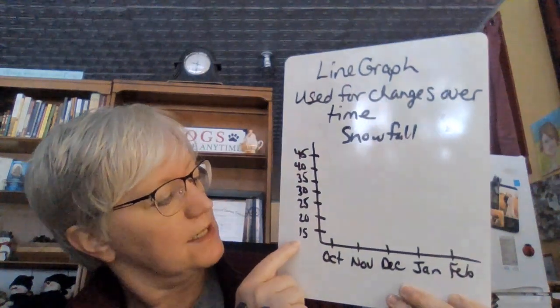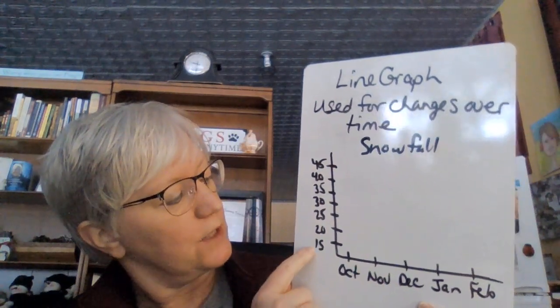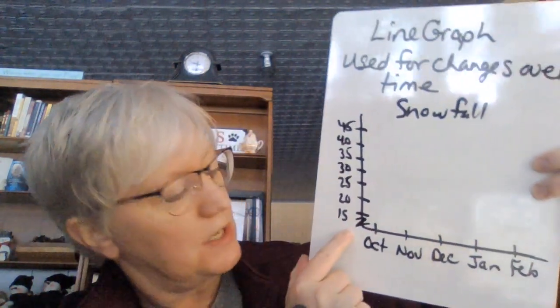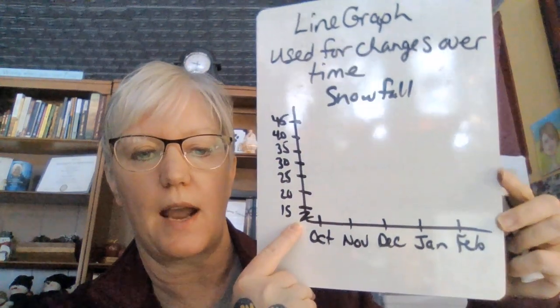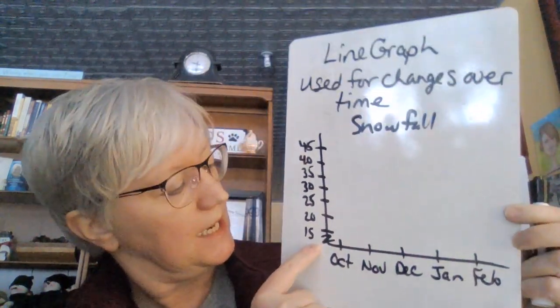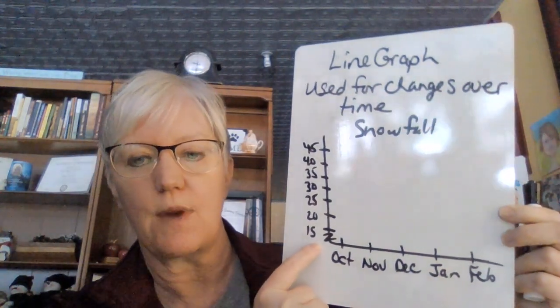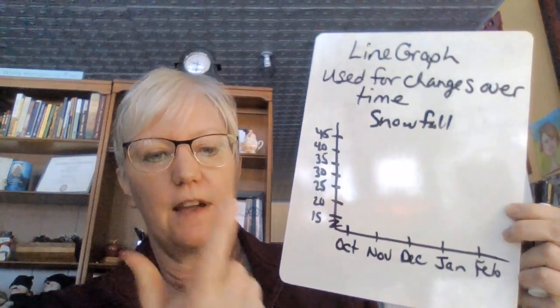I'm going to do snowfall from October to February. Notice that I decided to start at 15 and then go by fives. Since that's not a consistent interval — I'm counting by fives but didn't start at zero — I'm going to put what's called a graph break. If you're not going to have a consistent interval, you need to put that little z-looking thing on graphs that don't start at zero. That's indicating I didn't have anything below 15, so I recognize I missed five and ten.